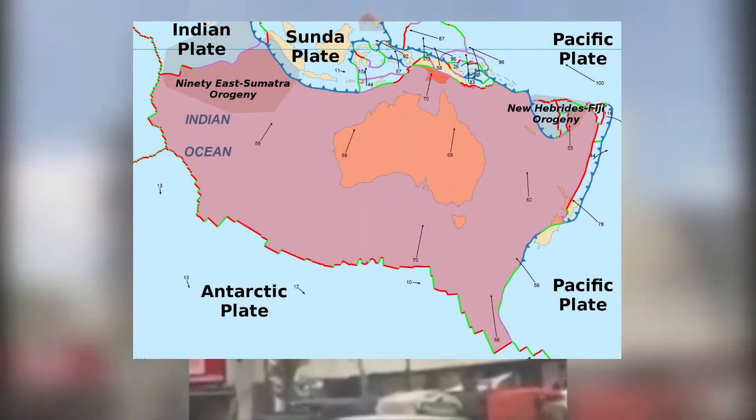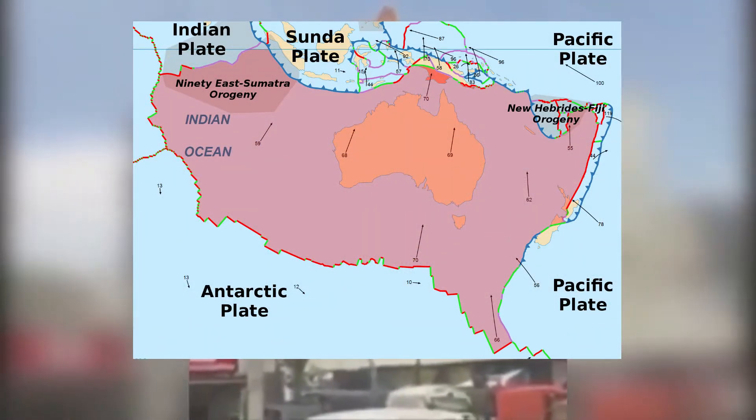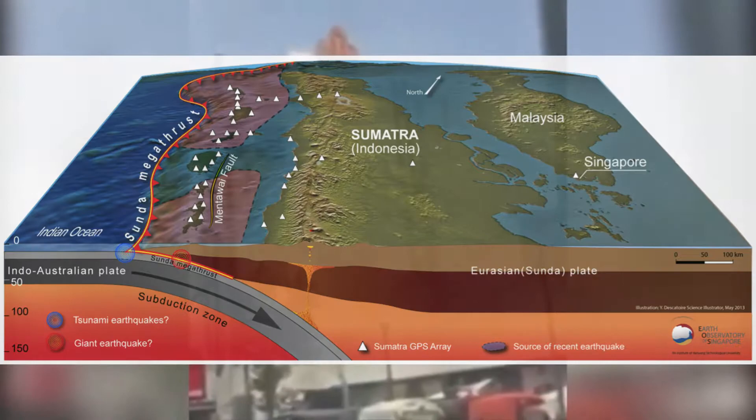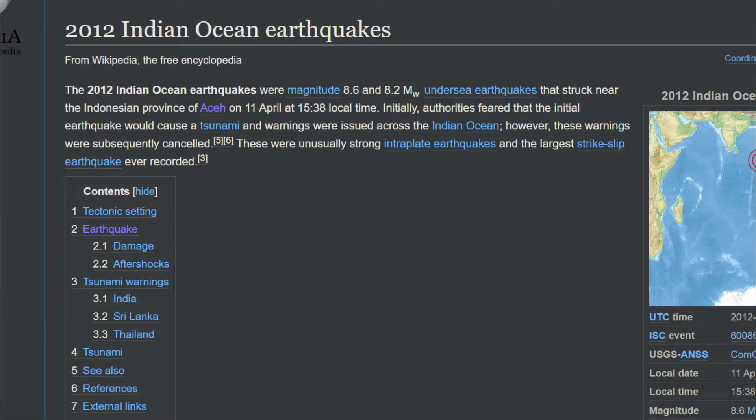Meanwhile, the Australian Plate is smoothly subducting under the Sunda Plate. This has caused compression in the boundary between the Indian and Australian plates, resulting in the 2012 Indian Ocean earthquakes.